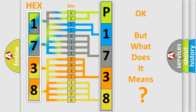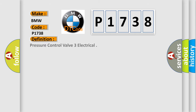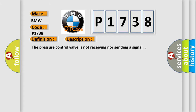The number itself does not make sense to us if we cannot assign information about what it actually expresses. So, what does the diagnostic trouble code P1738 interpret specifically for BMW car manufacturers? The basic definition is: Pressure Control Valve 3 — Electrical. This is a short description of this DTC code: the pressure control valve is not receiving nor sending a signal.